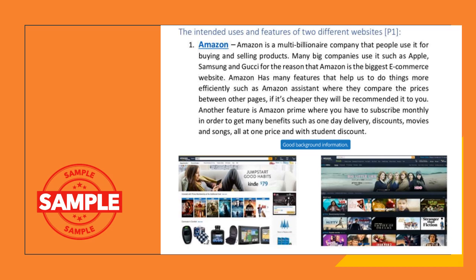This is P1, the first section you'll be working on. For this section, you want to write about the intended uses and features of two different websites. For this assignment, we'll be working on Amazon and BBC News. For Amazon, give a brief account of what Amazon does as a company, then go into a little bit of background information. Remember, please don't plagiarize — it's someone else's work, it's just an example so you can see what you need to do.